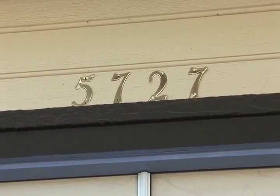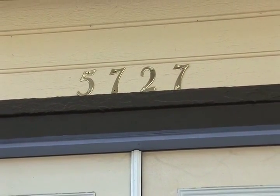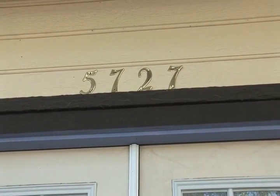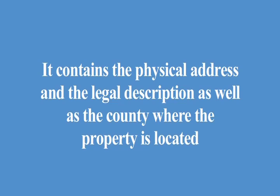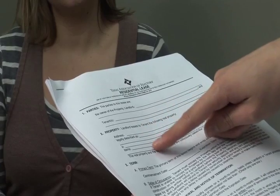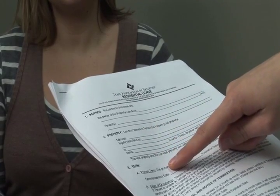Paragraph two, Property. This paragraph identifies the real property leased to the tenant. It contains the physical address and the legal description as well as the county where the property is located. It also identifies any non-real property items that may be included, such as refrigerators, washers, dryers, personal items, and the like.